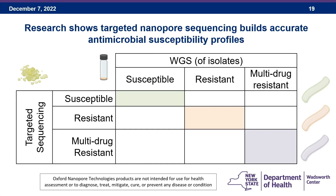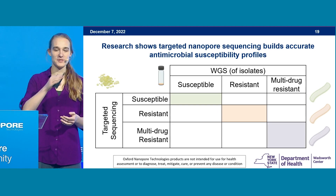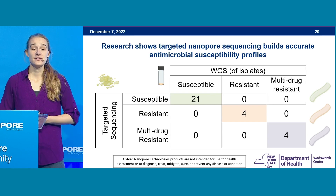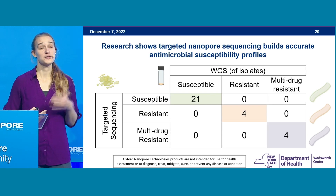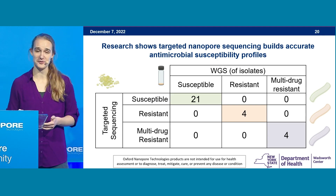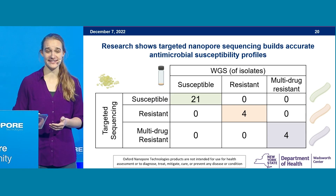I want to show that this data is accurate. Here I have a comparison of the profiles identified by targeted sequencing on one axis and whole genome sequencing on the other. If results agree, all samples should fall into the shaded diagonal. With this method, we successfully identified 21 susceptible strains, four drug-resistant, and four multidrug-resistant — achieving 100% concordance between the two assays.